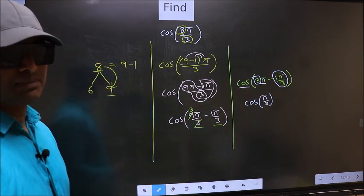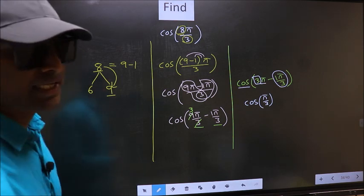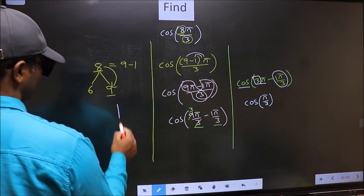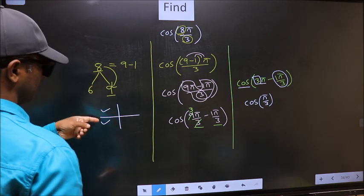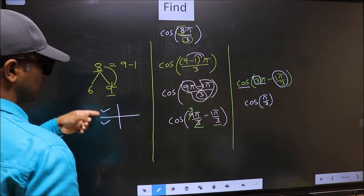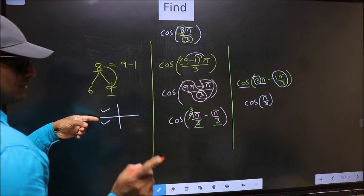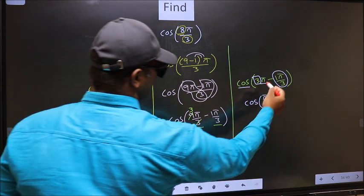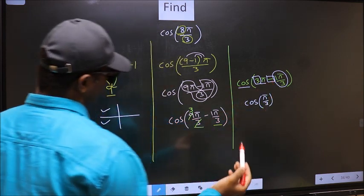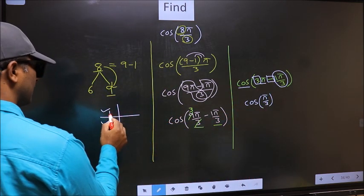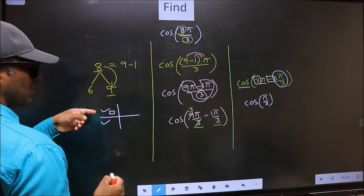And all the odd multiples of π, they lie in 2nd or 3rd quadrant. So now to check in which quadrant does it lie, we should look at this symbol. Here we have negative.